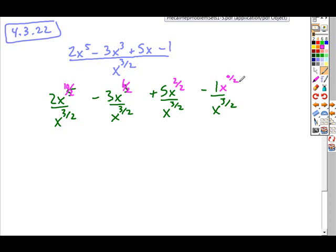So here when we divide exponents with the same base, what do we do with their powers? Subtract. So we're going to have our answer of 2x to the 10 halves minus 3 halves, minus 3x to the 6 halves minus 3 halves, plus 5x to the 2 halves minus 3 halves.